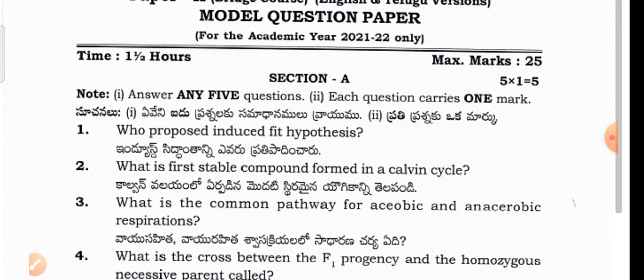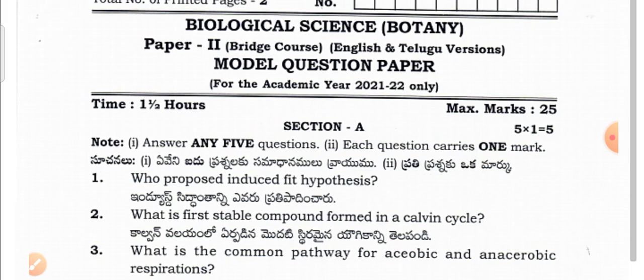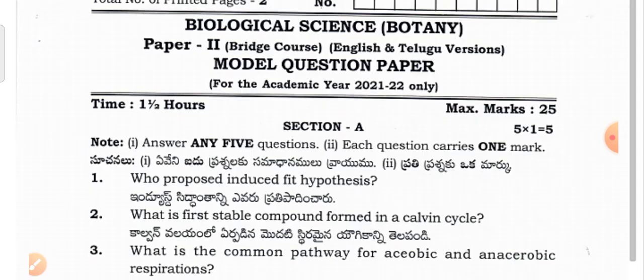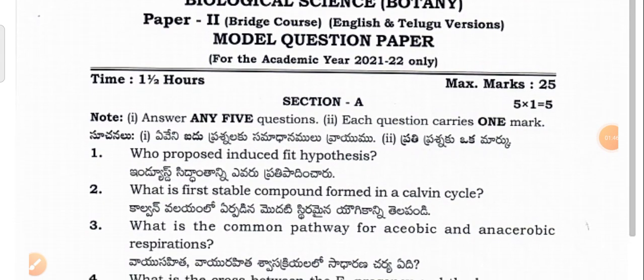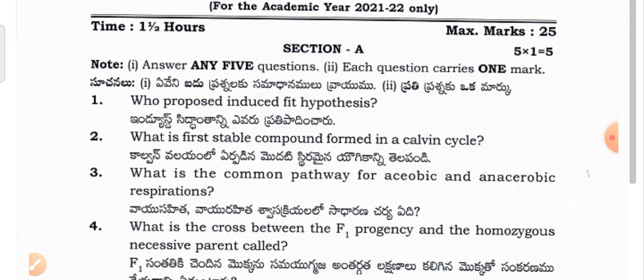This video is for Bridge Course Second Year Students in Biological Sciences — Botany — for Telugu Medium students. There are 25 marks total in this paper, and in this video we will be covering 9 marks worth of questions.